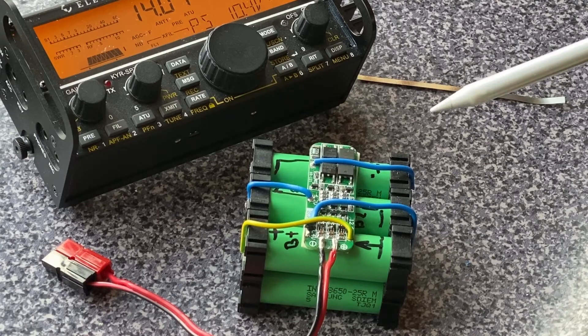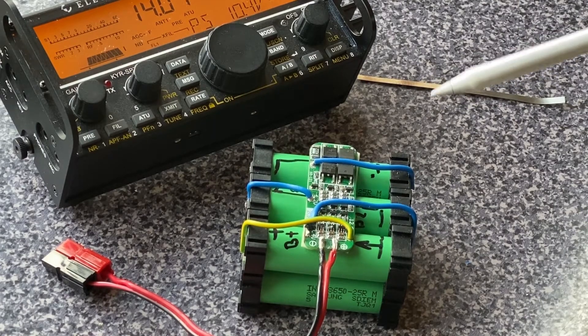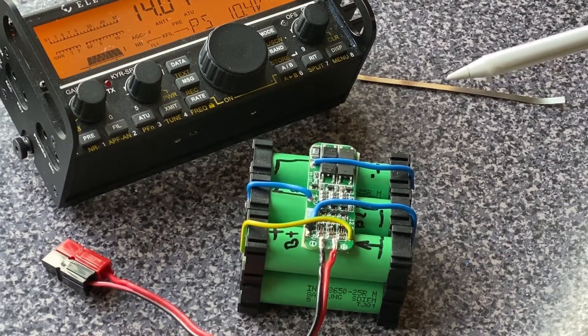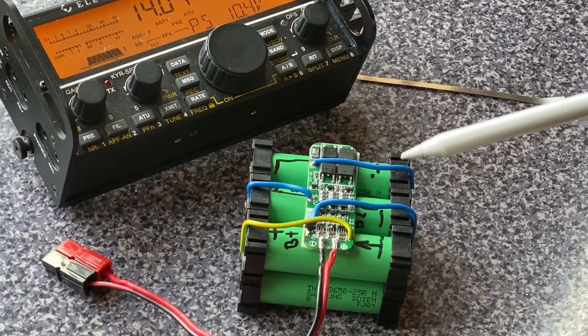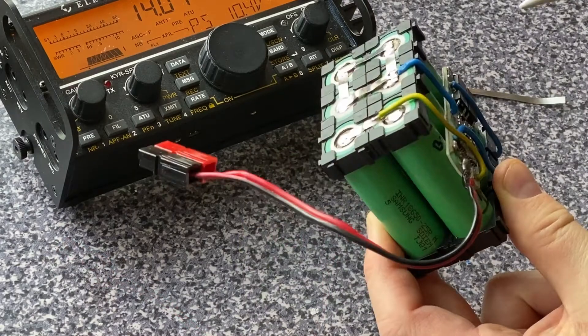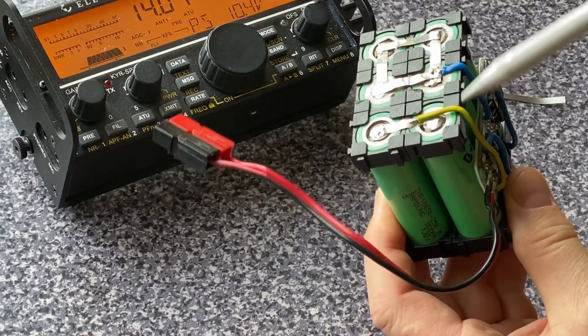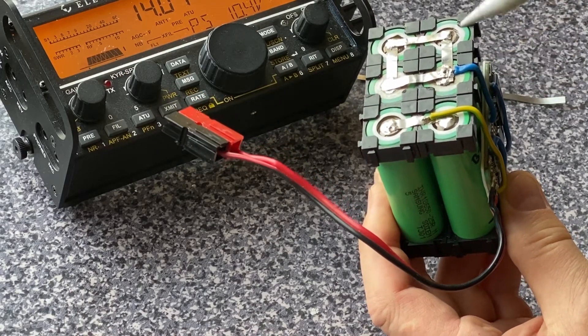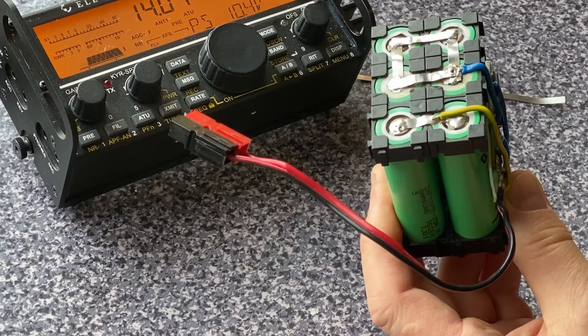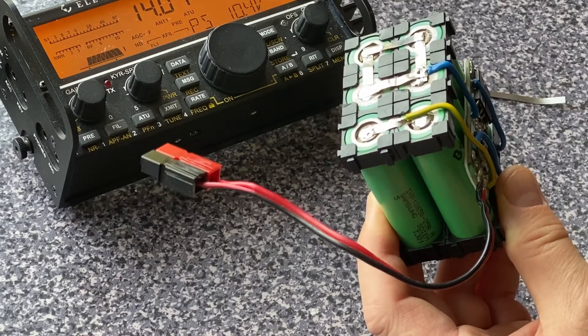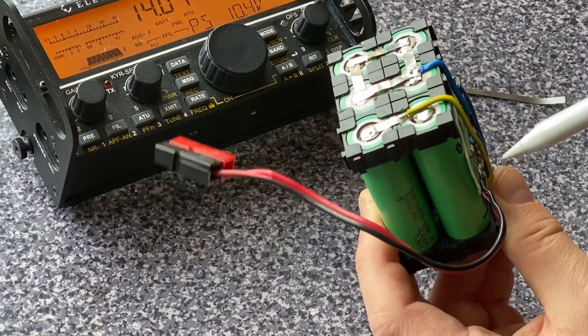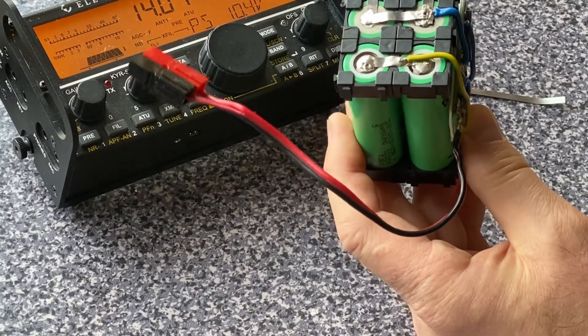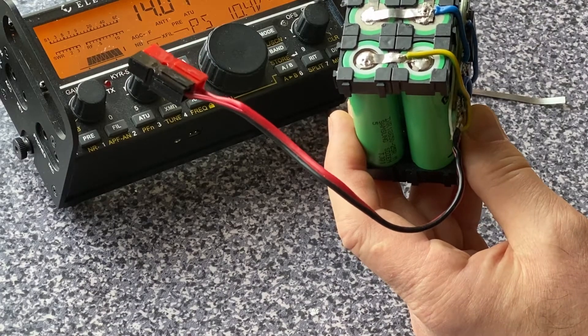But I did try to run my YAESU FT891 transceiver at the 30 watts level in the FT8 mode for almost one and a half hours with no problems with this small lithium-ion battery pack. Again I needed 12 small plastic square battery holders which are connected with each other in a very smart manner in order to make a battery pack of six separate lithium-ion cells.